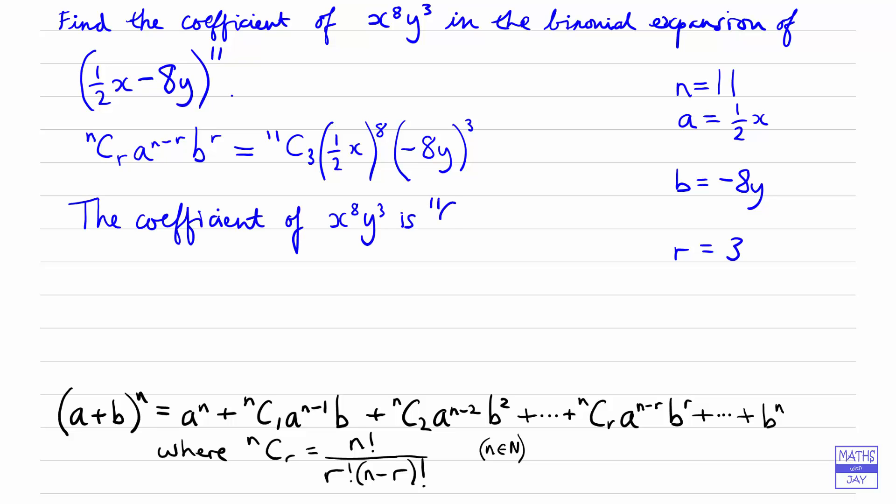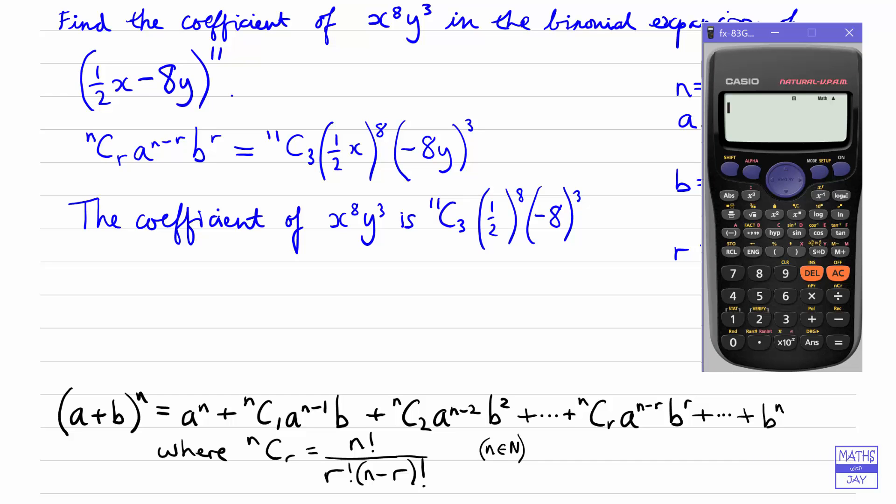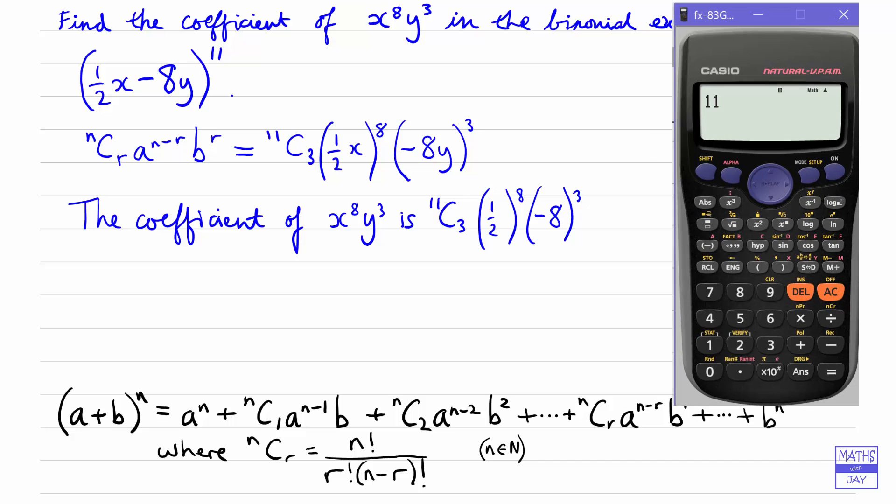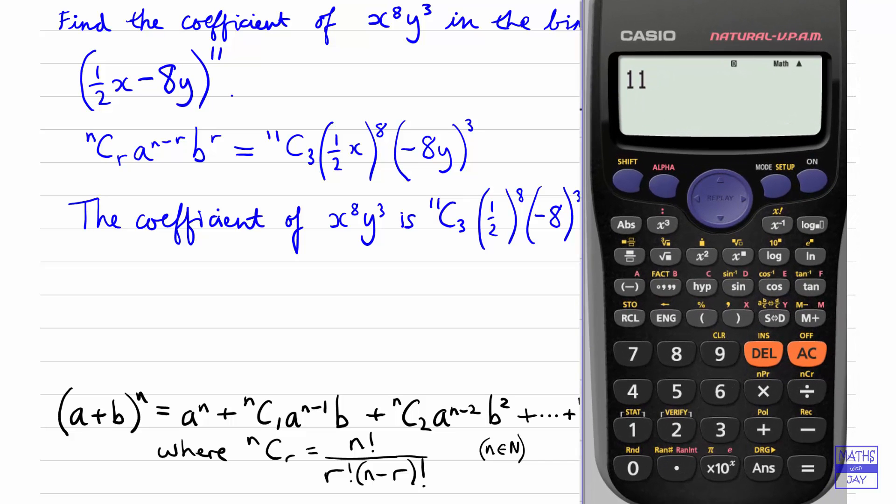So that's 11C3, half to the power of 8, and minus 8 to the power of 3. Notice I've left out the x and y because I've written the coefficient of x to the power of 8 y cubed is, and then it's just going to be whatever this number comes to. Let's input that to the calculator, starting with the 11. And then nCr on the calculator is above the divide.